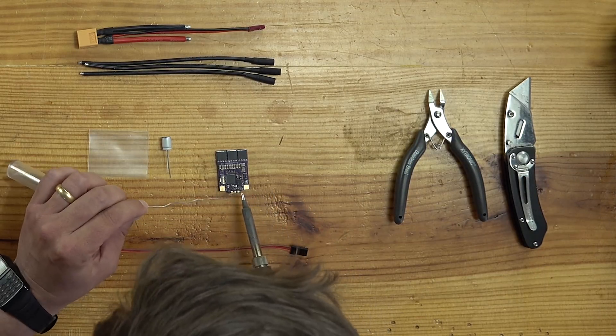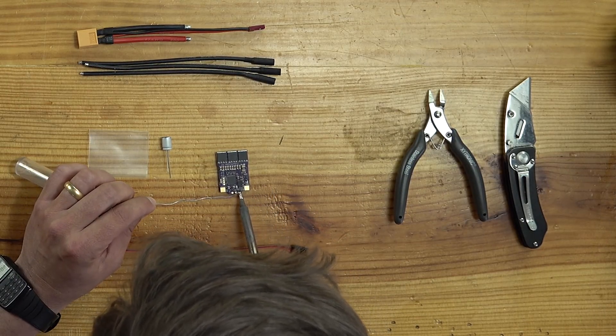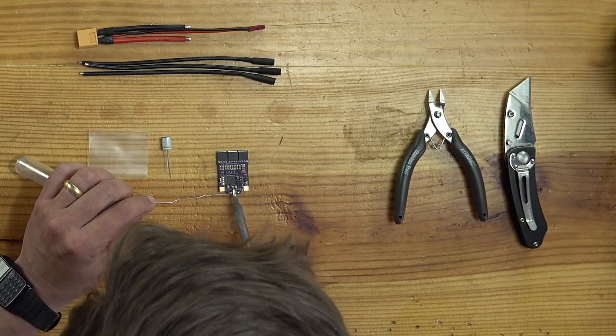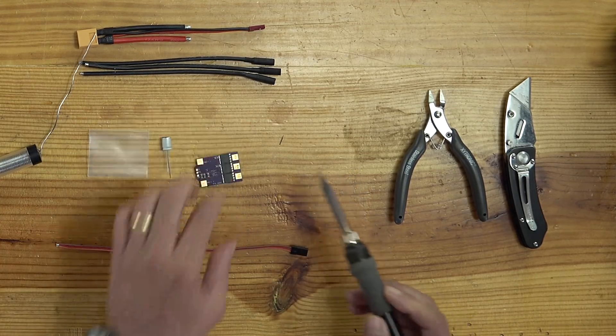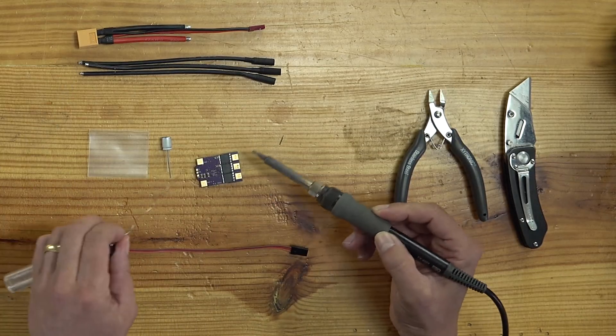But first, here we go. We're going to pre-tin these pads - a little solder on the soldering iron tip, and I'm just dragging it right across. One, two, three, there we go. So now I'm going to do our motor pads.